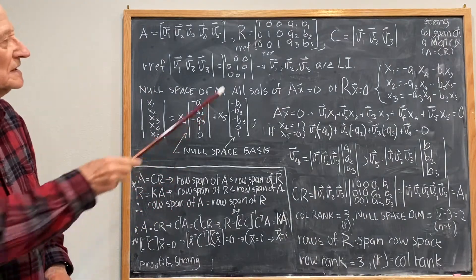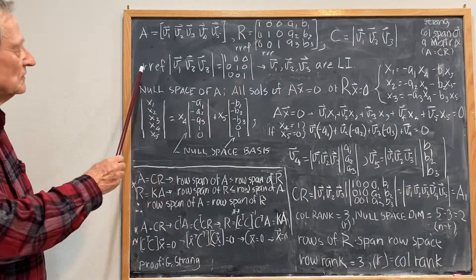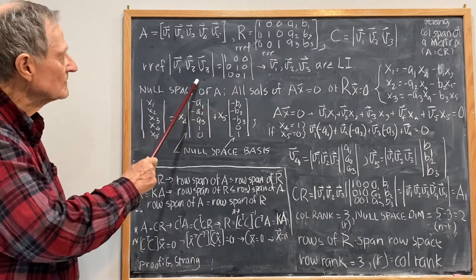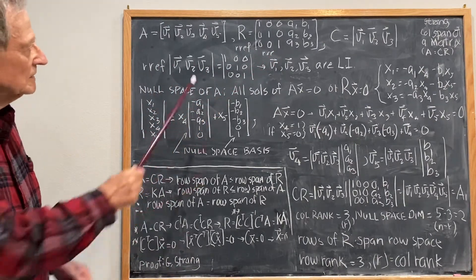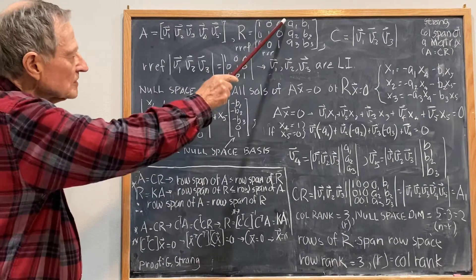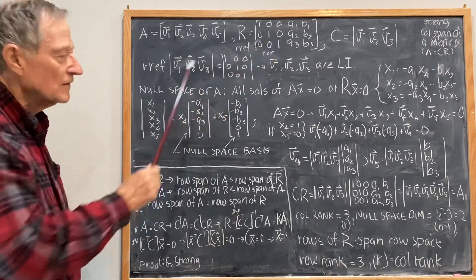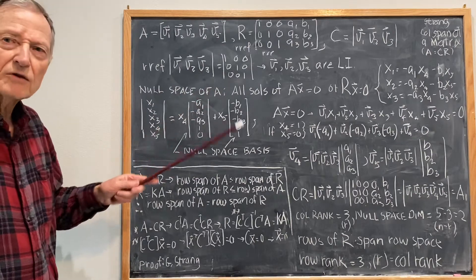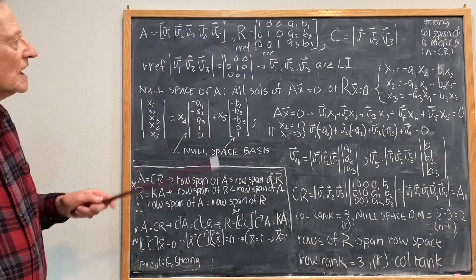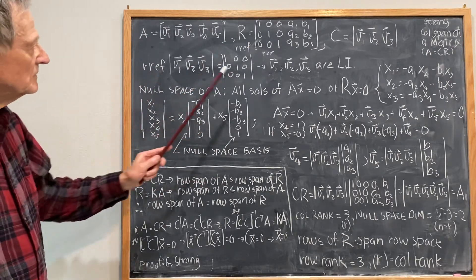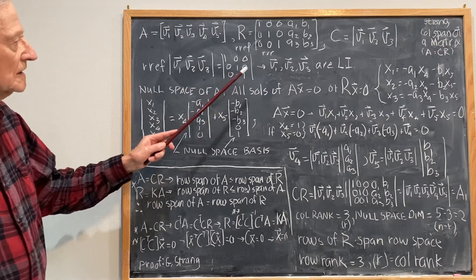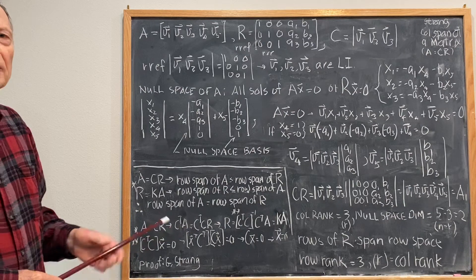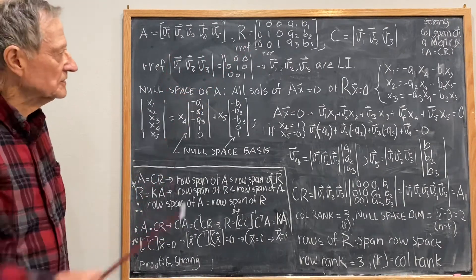The first thing that stands out is, if I look at the reduced row echelon form of the matrix C, I note that I get this matrix here, which is the first part of R. The reason for that is, if you calculate the reduced row echelon form, you only change rows — you don't change columns. This is immediate, and it says that V1, V2, and V3 are linearly independent — an immediate result from the factorization.